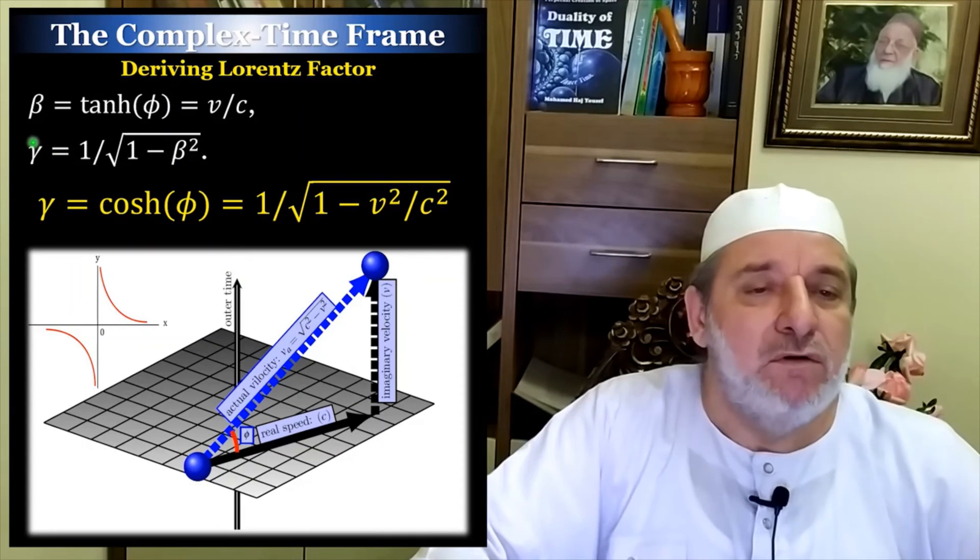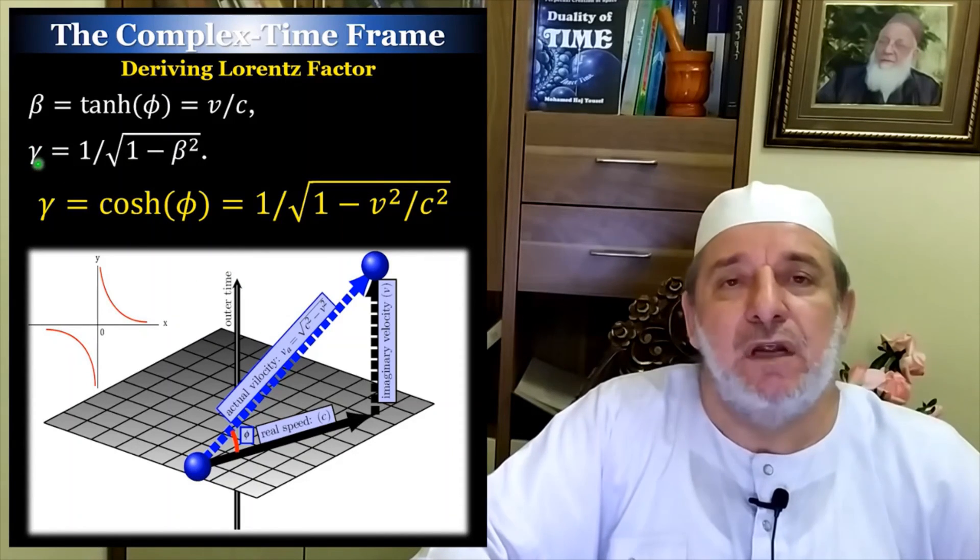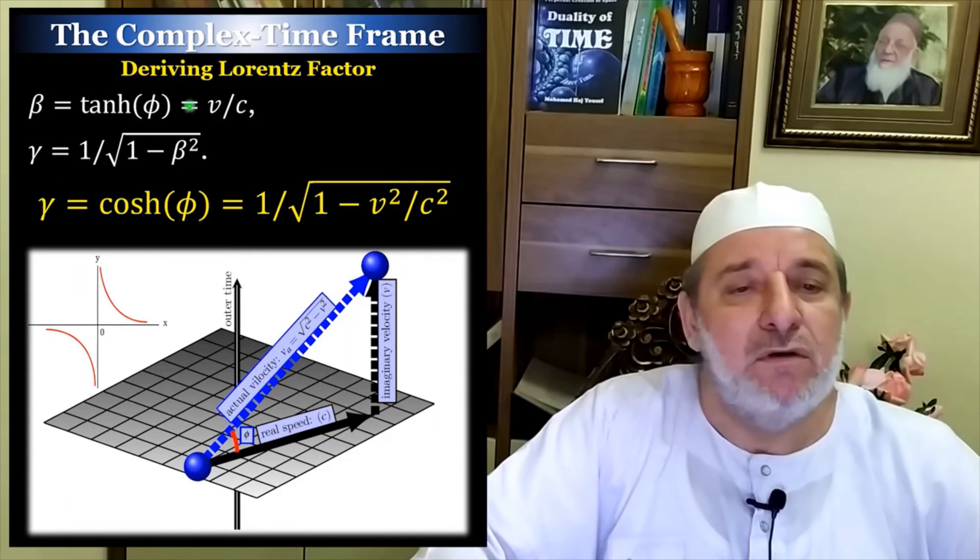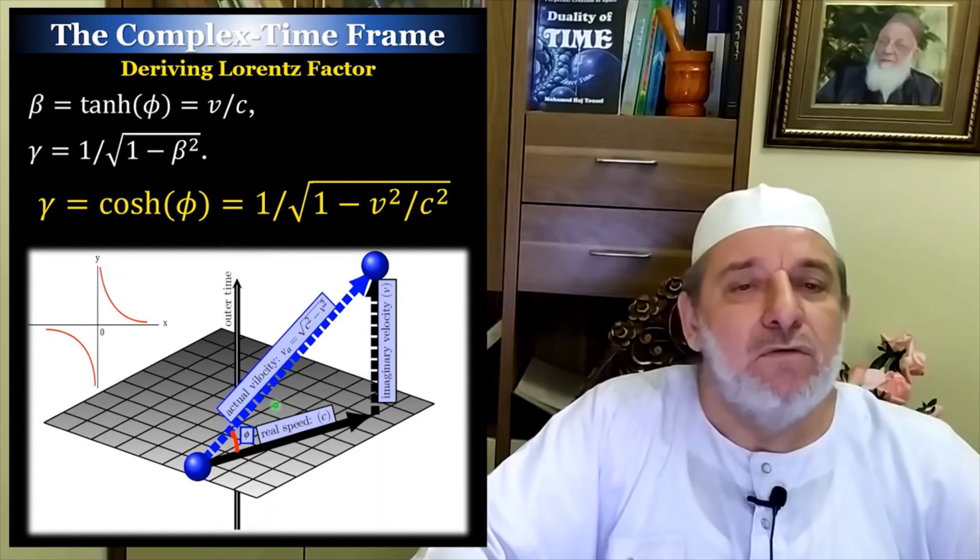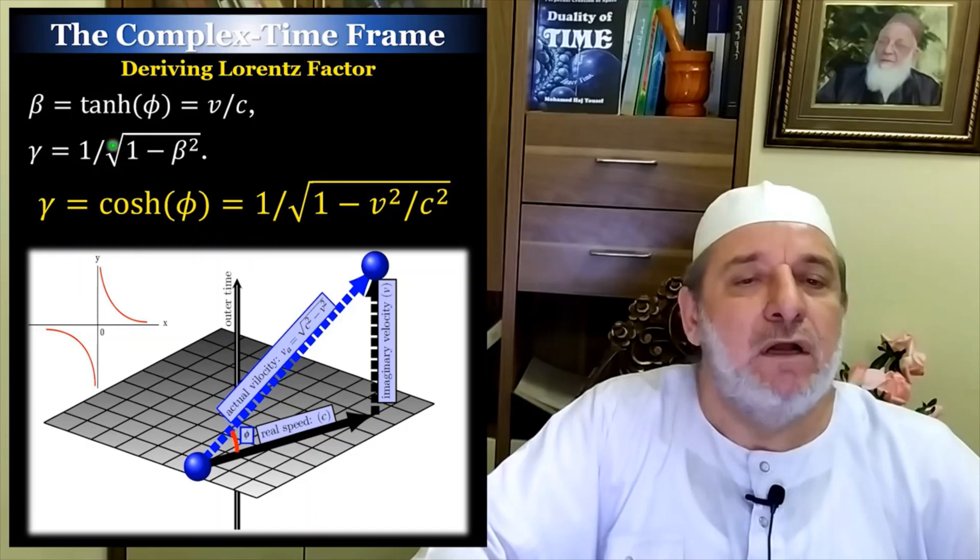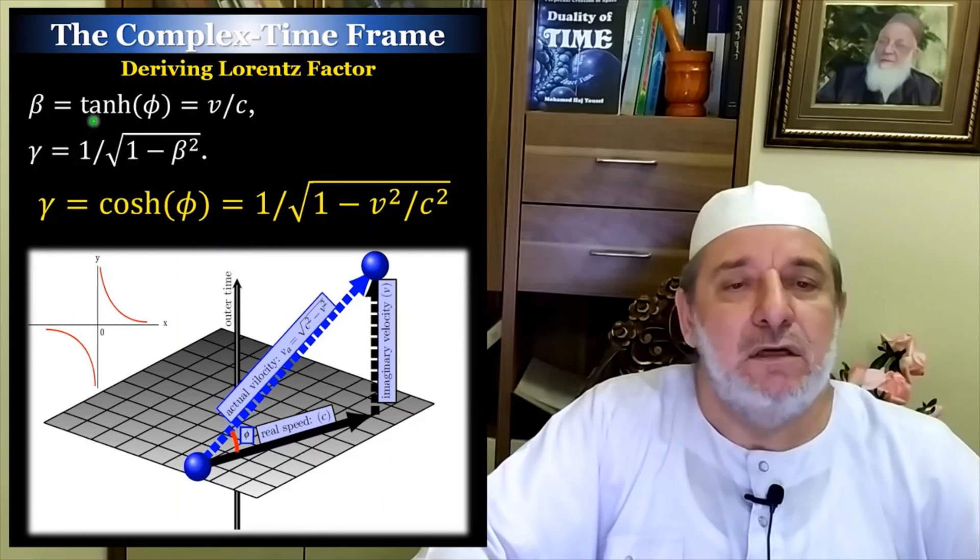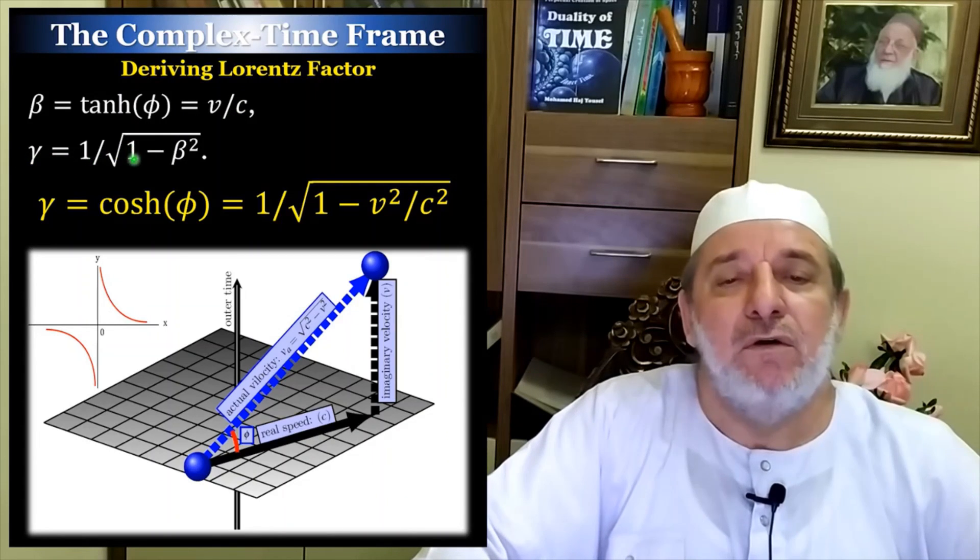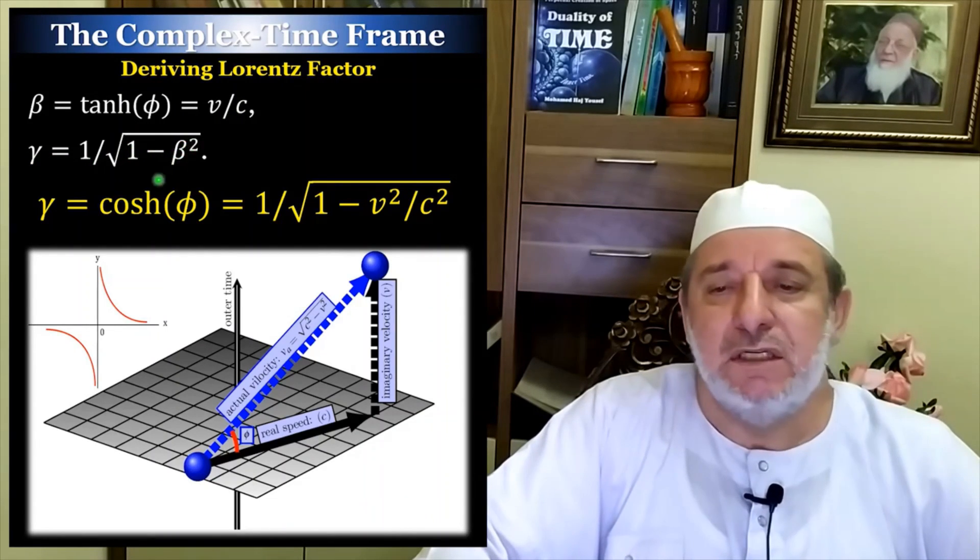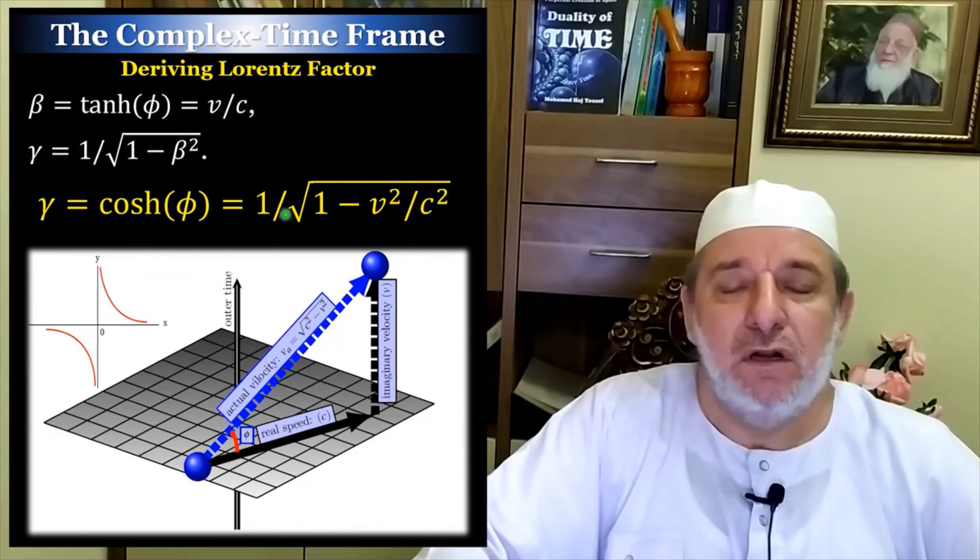And therefore, the known gamma, which is the Lorentz factor, is cosine this angle here, which is equal to one. Actually, tan of this angle is V over C. So cosine will be one over one minus beta square, which is the same Lorentz factor that is already known to you.